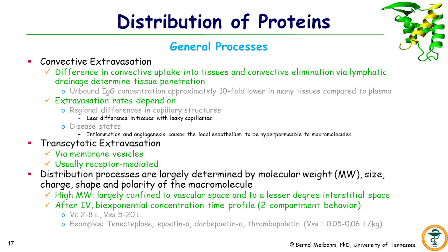Distribution processes are largely determined by molecular weight, size, shape, and charge and polarity of the macromolecules. Those with high molecular weight are usually confined to the vascular space and to a lesser degree the interstitial space. The typical pharmacokinetic behavior after intravenous administration shows a biexponential concentration-time profile where the central volume of distribution is equal to or only slightly larger than plasma volume, approximately 2 to 8 liters, and the overall volume of distribution remains limited, generally between 5 to 20 liters.